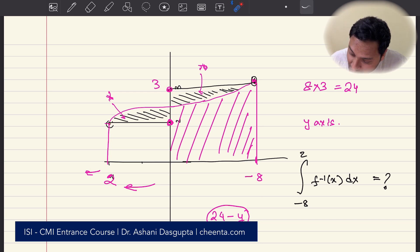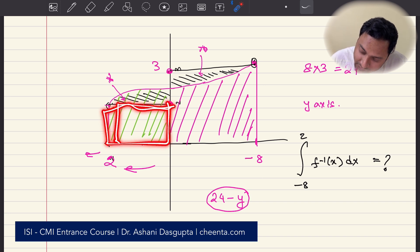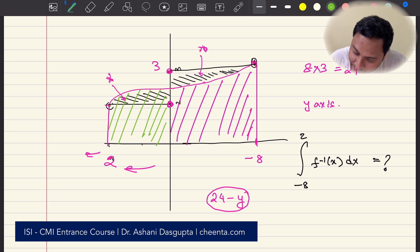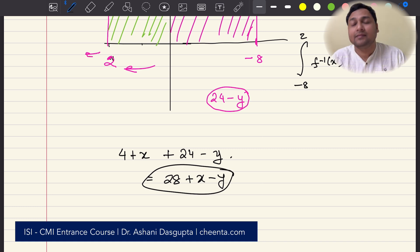And here, what we have is, we have a box like this. So, we want this total area, right? So, let's do it in green. This little portion is 2 times 2, 4. And this much is x. Right? So, we have 4 plus x. So, the total area under curve is 4 plus x plus 24 minus y. That is 28 plus x minus y. That's it. That is the area under the curve of the inverse function.